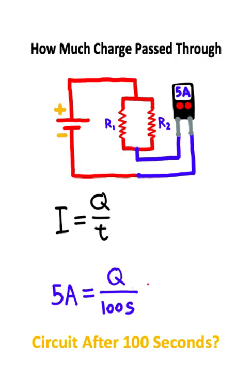Now what I'm going to do is take both sides of this equation and multiply it by 100 seconds, and that'll get the 100 seconds to cancel on the right side of this equation.